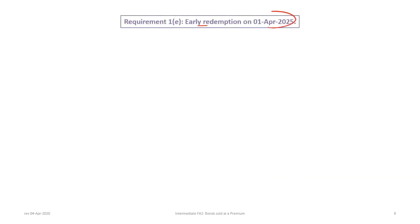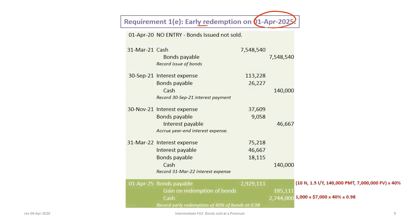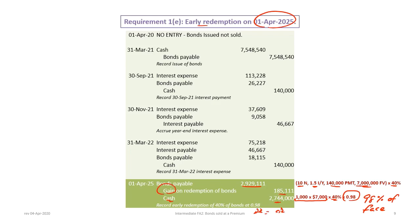For the early partial redemption on April 1st 2025: using 10N, 1.5%, $140,000 payment, $7,000,000 future value, the carrying value is $7,322,776, and 40% of that is $2,929,111 — the debit to bond payable. Cash is credited for the face value times 40% times 98% = $2,744,000. The difference — a credit of $185,111 — is a gain on redemption of bonds.